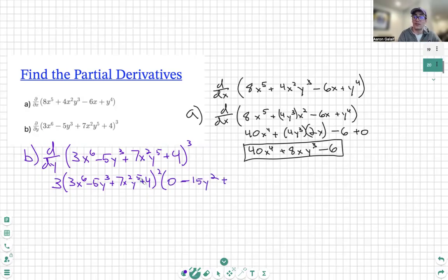And we have y to the fifth. So we're going to do five times 7x squared, which is 35x squared y to the fourth. Perfect. That is the derivative of the inside. We have plus four, which is another plus zero. So we don't need to write it.